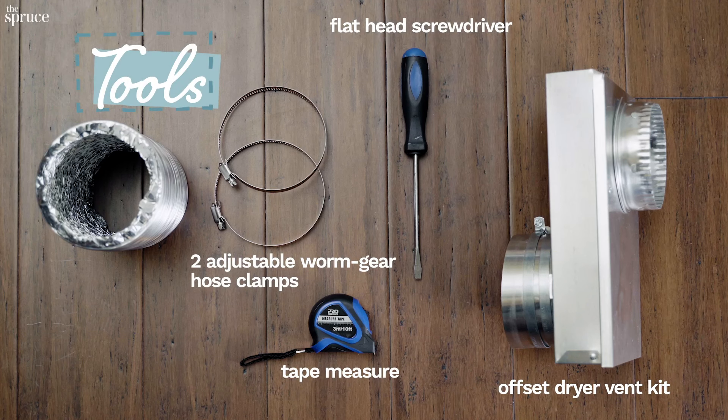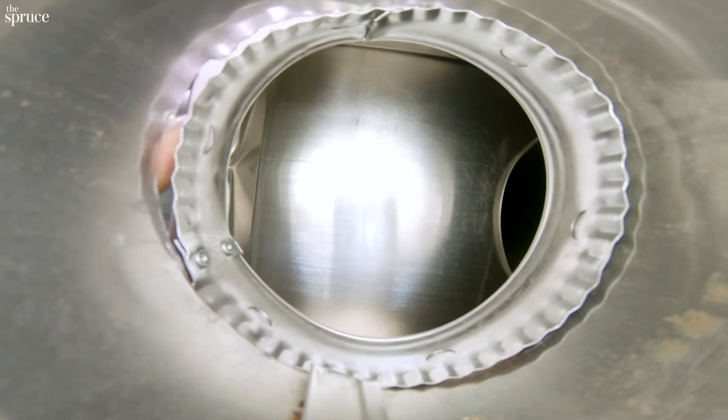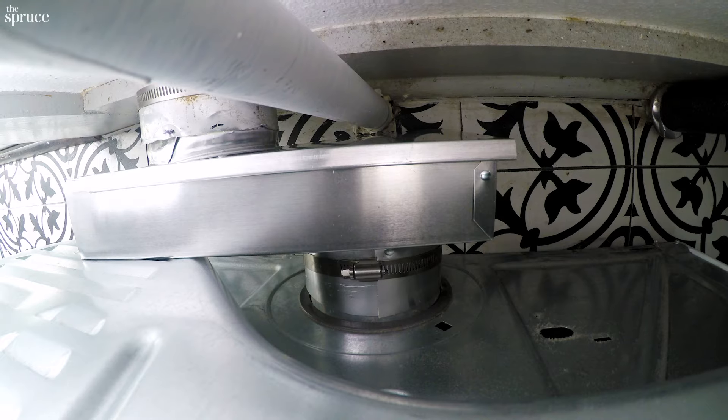The first thing I'm going to do is unplug my dryer. Next, I'm going to use a measuring tape to measure the distance from the dryer vent to the wall. Once I have that distance identified, now it's time to take the measuring tape and mark that distance against the adjustable dryer vent.